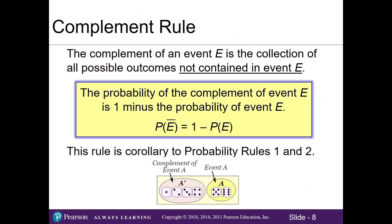The complement rule doesn't get its own number but you'll see it a lot in future chapters. It states that the probability of the complement of an event E is simply 1 minus the probability of that event, and it's related to rules 1 and 2. For example, with a six-sided die, if I need a five or six to win, the complement is everything else — we take 1 minus the probability of the event we want to get the complement.